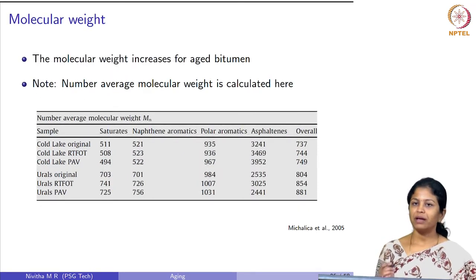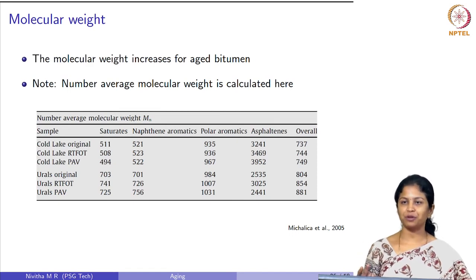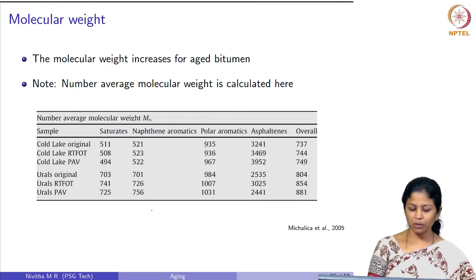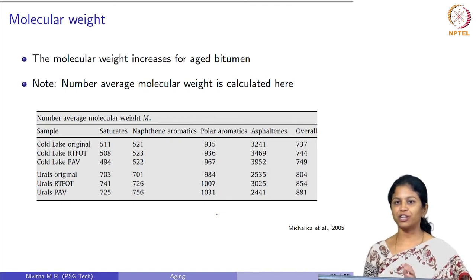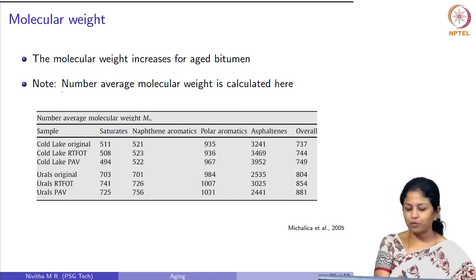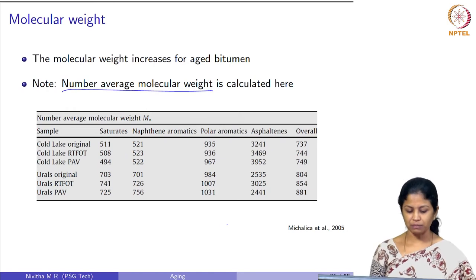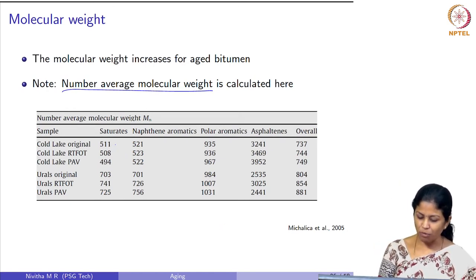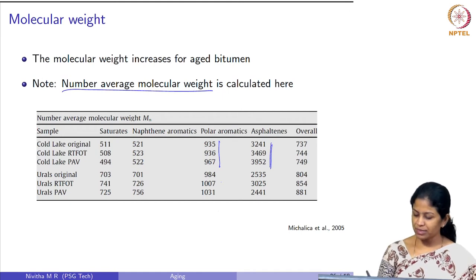The molecular weight increases for aged bitumen because of associations. Comparing the increase in number average molecular weight across the four SARA fractions: the saturates fraction shows a small reduction, naphthene aromatics show little change, polar aromatics show a small increment, and asphaltenes show a significant increment in molecular weight. This pattern is similar for both cold lake bitumen and Ural bitumen.